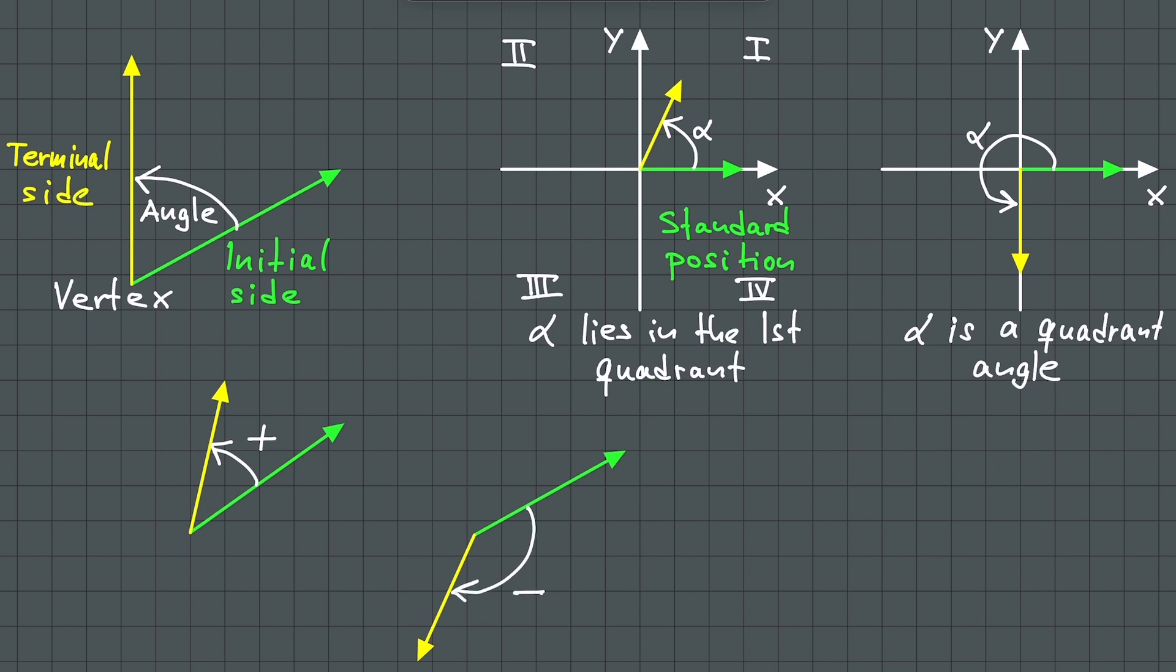When angles have the same initial and terminal sides, then the angles are called coterminal.